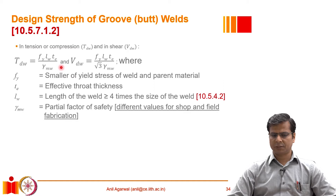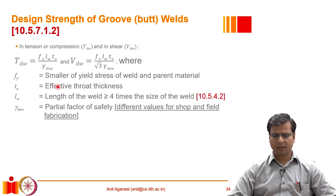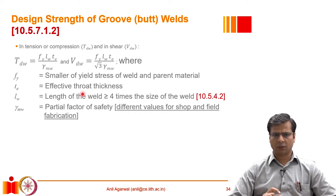If it is a full penetration groove weld, we basically take the thickness of the thinner plate that is joined at that location. If it is a partial joint penetration type of groove weld, then we take the effective throat thickness, as discussed in earlier sections, which can be taken as the summation of the two portions of the weld that are provided.